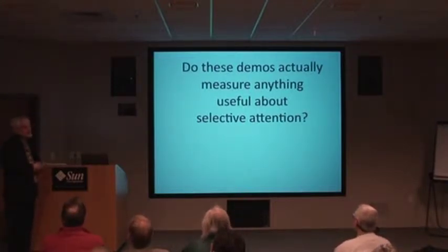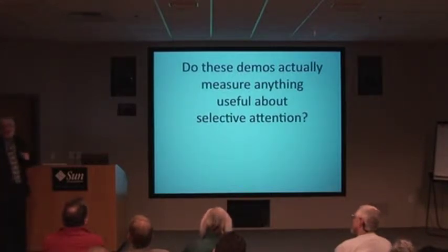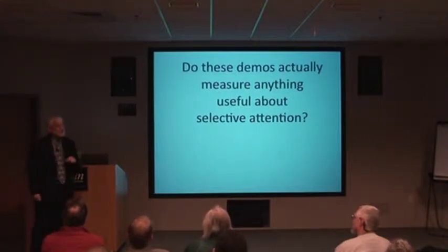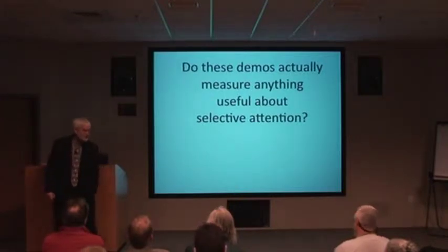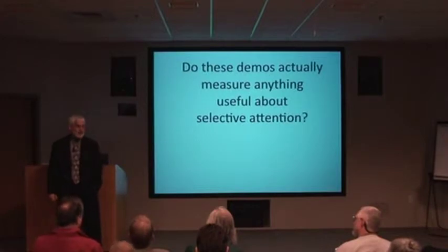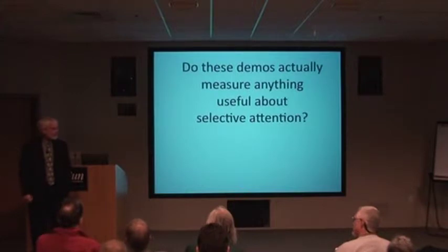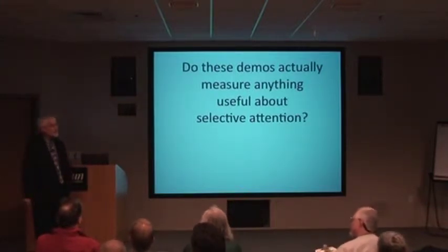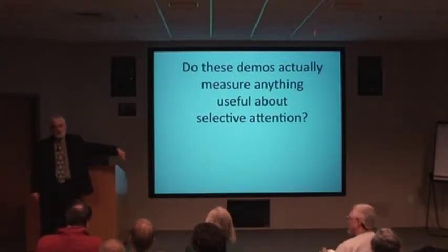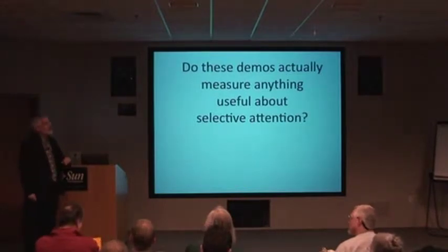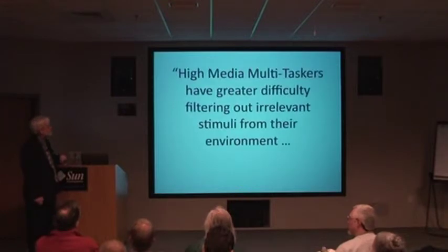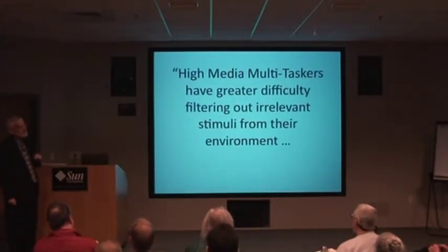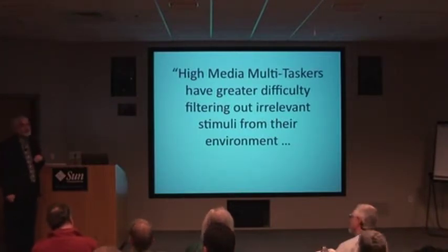What the Stanford researchers found was striking: people who identified themselves as high multitaskers — frequent, confident multitaskers — actually did worse than the others. On the rectangle task, they fell dramatically. One of the conclusions was that they were ineffective at suppression of the activation of irrelevant task sets — a flashy way of saying they couldn't filter out irrelevancy very well.